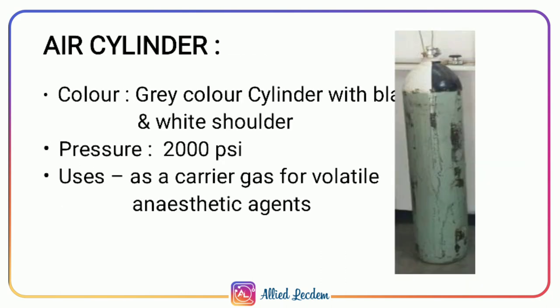The air cylinder has a gray body with black and white shoulder. The pressure is 2000 psi. Air is used as a carrier gas for volatile anesthetic agents.